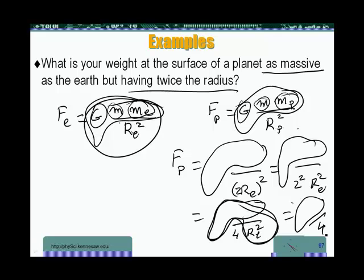What does that tell me? If I have a less dense planet having the same mass but twice the radius, I'm going to feel a lesser gravitational force. In this particular case, it's a fourth as much.